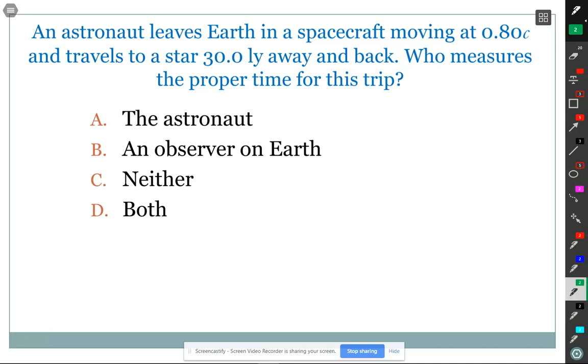Now to the question Ryan really wanted to ask. An astronaut leaves Earth in a spacecraft moving at 0.80C relative to the Earth, travels to a star 30 light years away and comes back. Who measures the proper time for this trip? It's more complicated, isn't it? Because the two events are the same location in both frames, but in only one frame did the clock remain stationary. And that's in the rocket ship. So the person in the rocket ship measures the proper time.